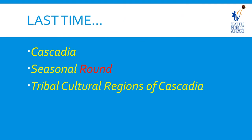Last time I defined Cascadia as a geographical region in the Pacific Northwest including parts of British Columbia. We defined seasonal round as a harvest calendar, but it's in a round shape because seasons are round, and a circle is considered a sacred shape in native cultures.